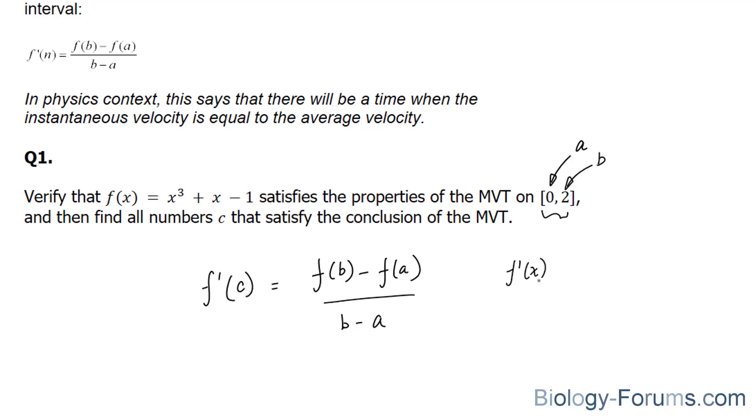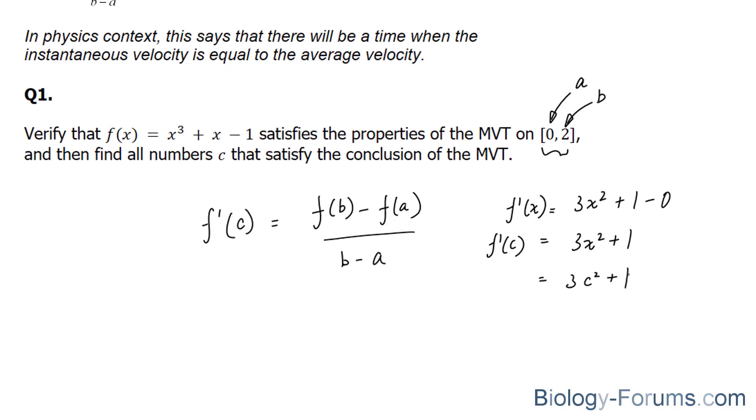So f'(x) = 3x² + 1 - 0. I use the power rule for these two terms. This simplifies to 3x² + 1. And what I'll do is apply c for my x. So f'(c) = 3c² + 1. I'll place that right here.